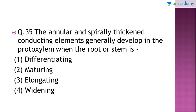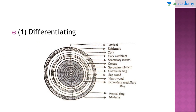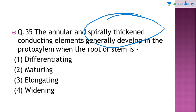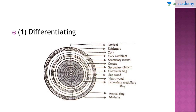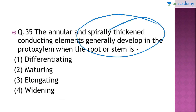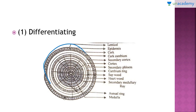Question number 35: which are the annular and spirally thickened conducting elements generally developed in the proto xylem when the root or stem is in which of the following stage? The right answer is option number one, that is differentiating stage. If you see the structures here, these annular and spirally thickened conducting elements are in the differentiating phase. The proto xylem differentiates and, according to season, forms the annular or spirally thickened conducting elements shown in the diagram. This is also given in NCERT, so please go through it once.